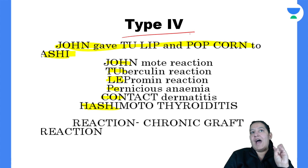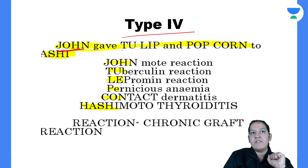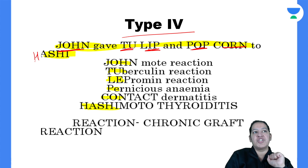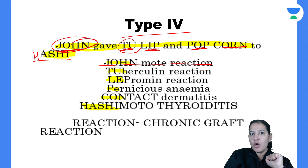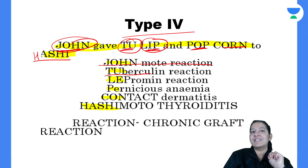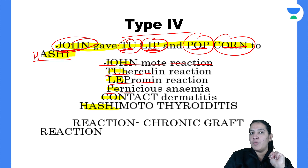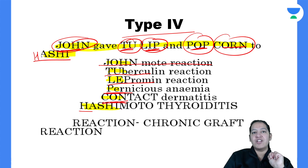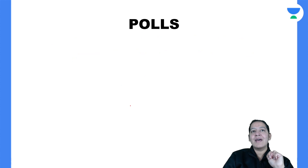Last is type 4 hypersensitivity. The mnemonic is: 'John gave Tulip and Popcorn to Hershey.' John stands for Jones-Mote reaction. T is Tuberculin test. Lip is Lepromin test. Pop — P — is Pemphigus/Pernicious anemia. Con is contact dermatitis. And Hershey is Hashimoto's thyroiditis. So these are the examples of type 4 hypersensitivity.